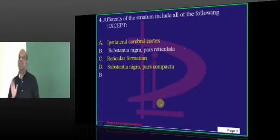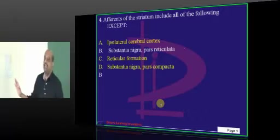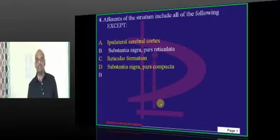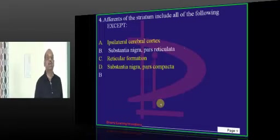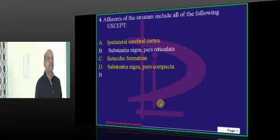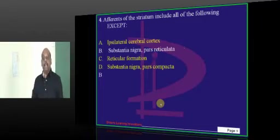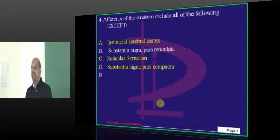Now, the nigrostriatal system — you must know what is the direct pathway and what is the indirect pathway in the nigrostriatal system.